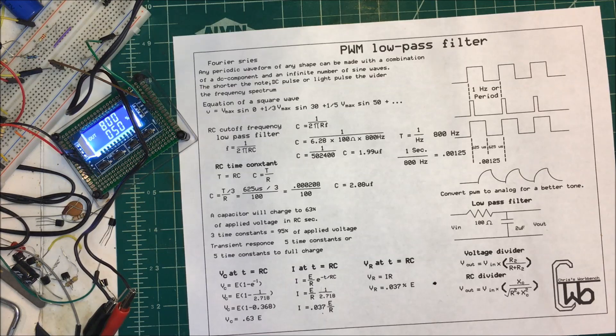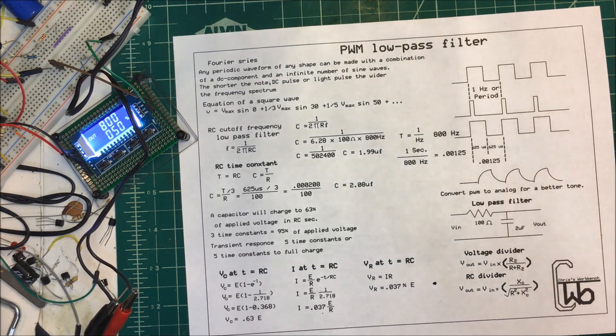Back to our 800 hertz sine wave again. I think that sounds better. I'm going to add this filter to my last project. And if I wanted to filter it out even more, I could add more stages to the filter. Anyway, that's PWM low-pass filter.